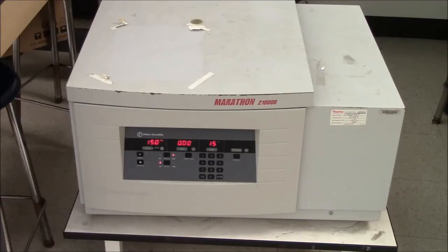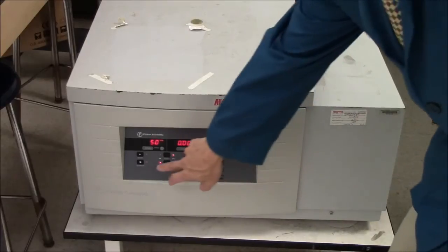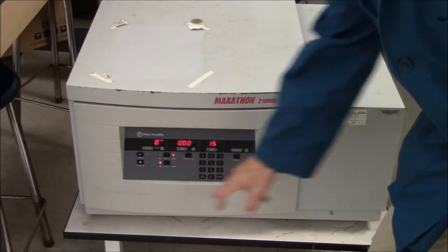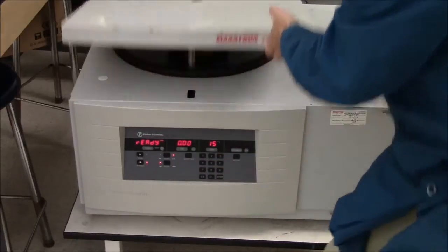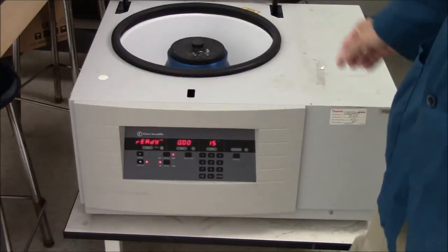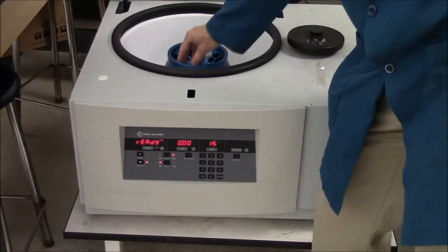Centrifuge has finished its spin. It's slowing down. The beep beep beep says I can open it. I need to press this button here. Hit stop/lid. Press it again while pulling on the lid. I can remove my tubes.